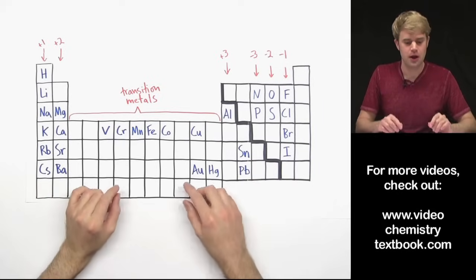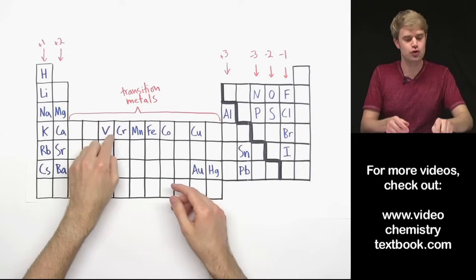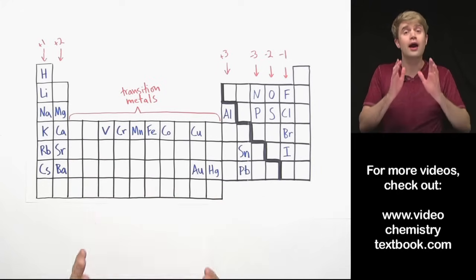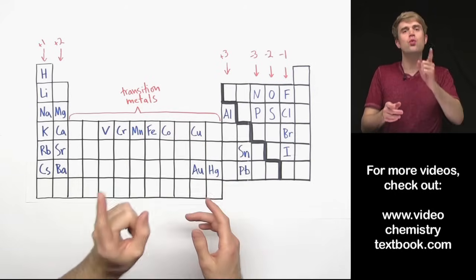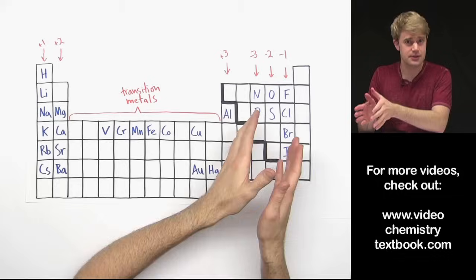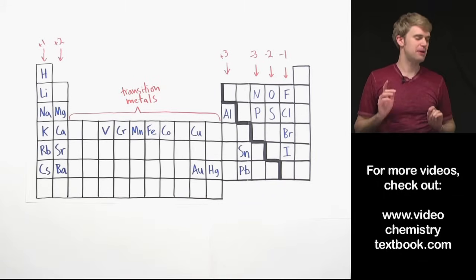This is the reason why. Transition metal elements, or at least I should say many of the transition metal elements, are able to make more than one type of ion. And each one of these types of ions has a different charge. Let me show you what I mean by this.